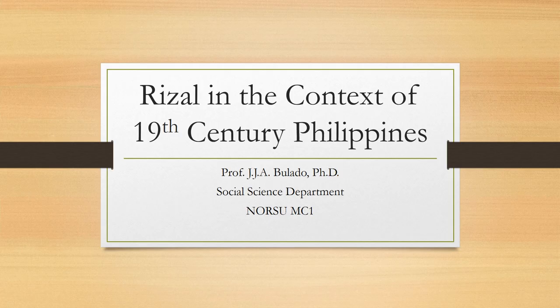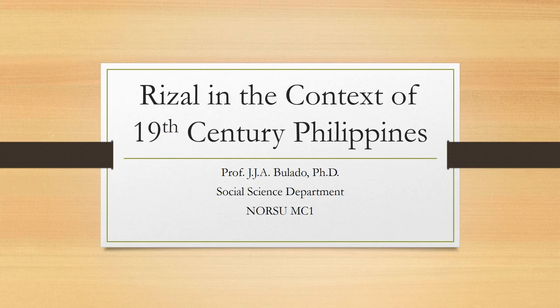19th Century Philippines is actually from 1800 to 1899. We have to look into the 19th century because, as you all know, Rizal was born on June 19, 1861, and he died on December 30, 1896. So he was 35 years old, and he lived during the latter half of the 19th century.